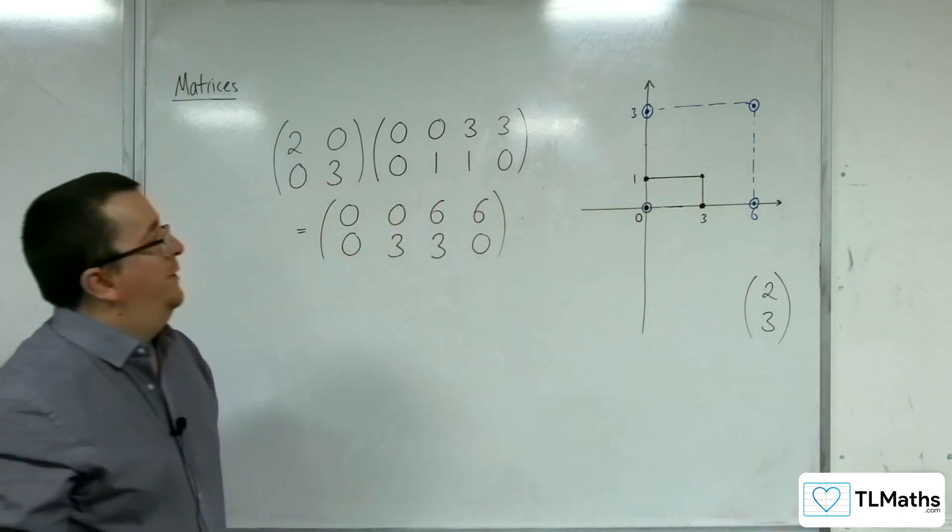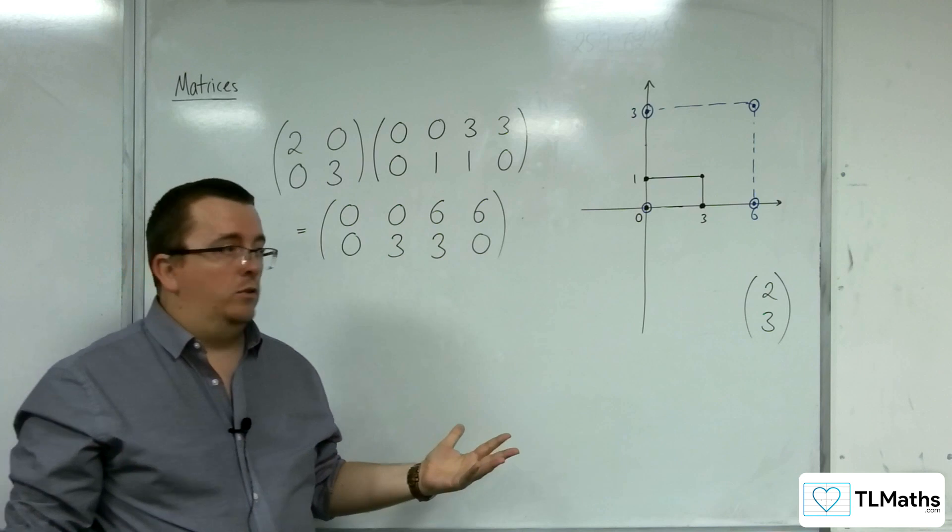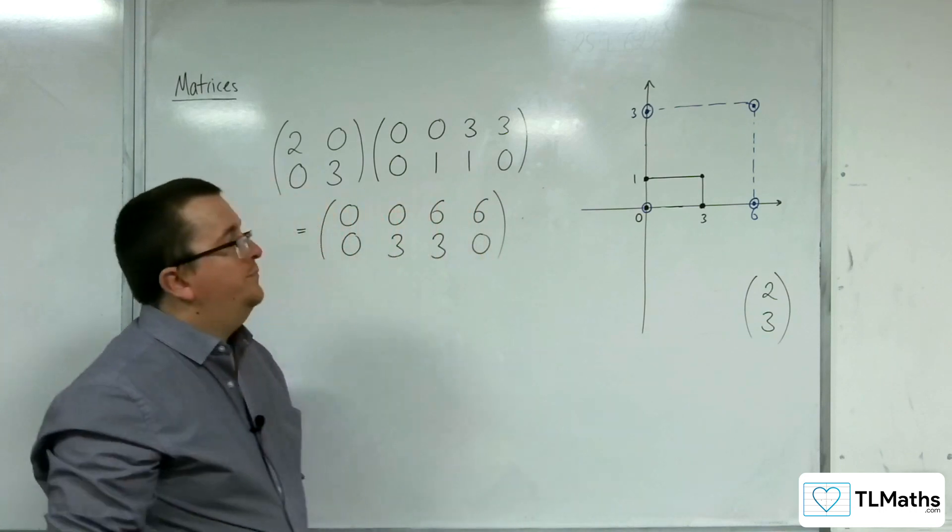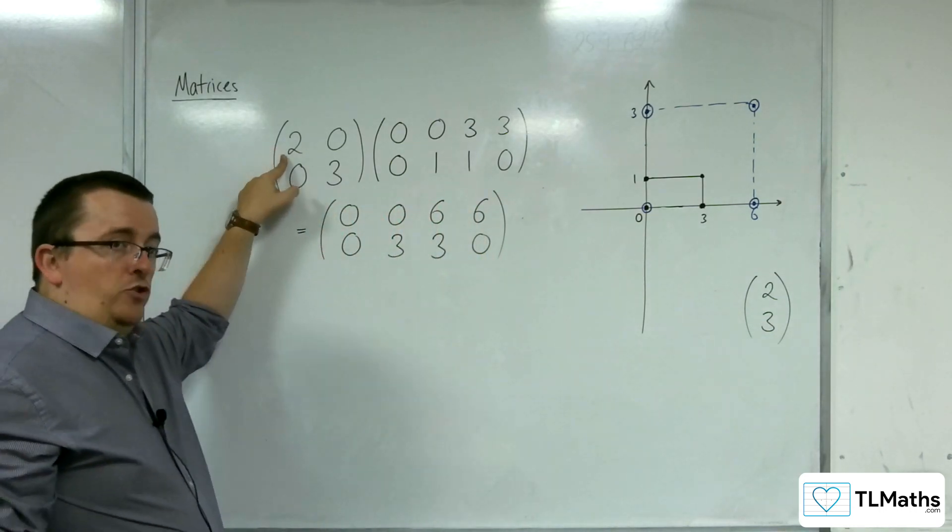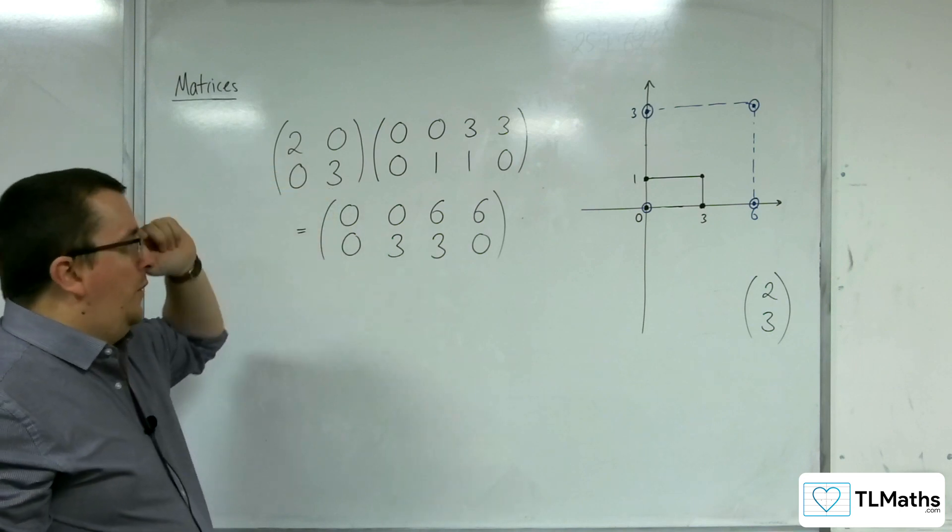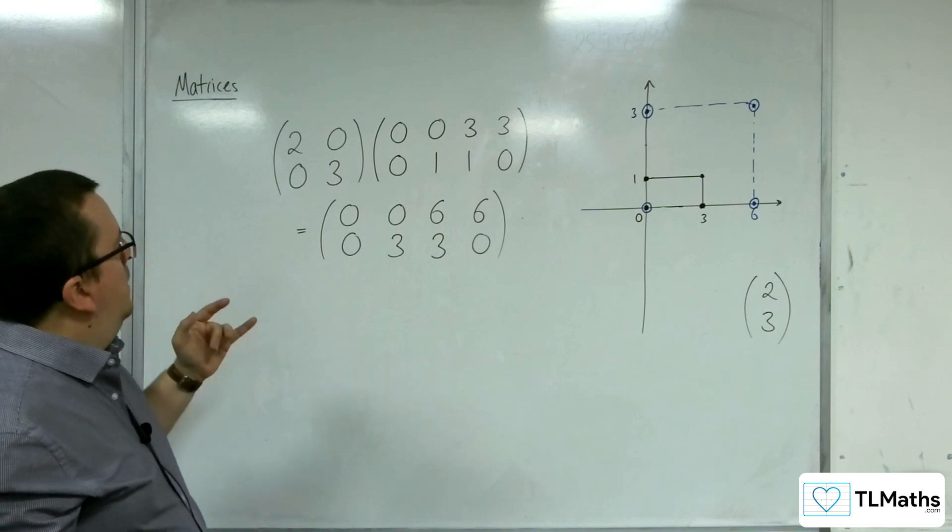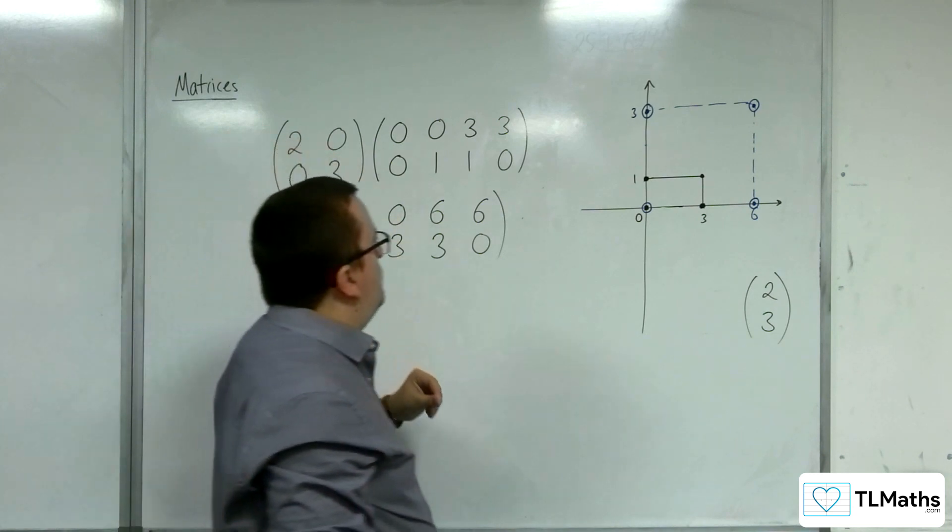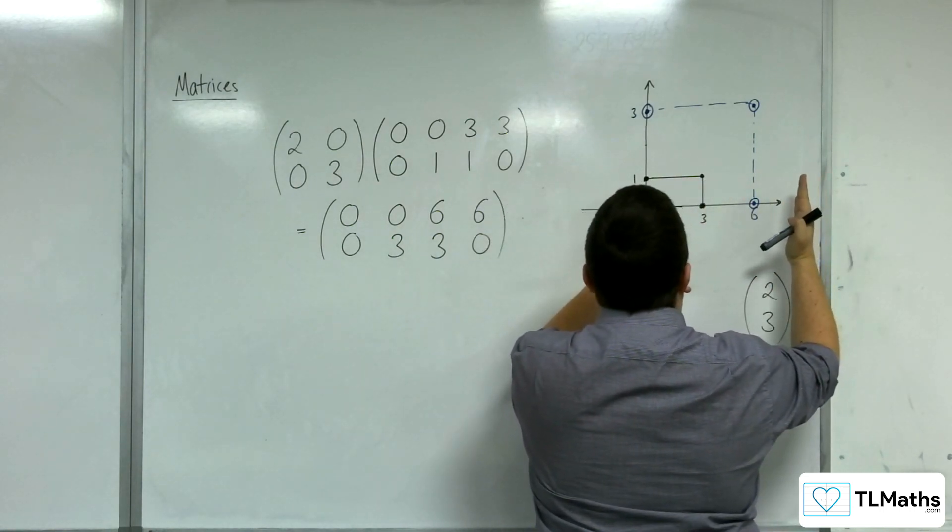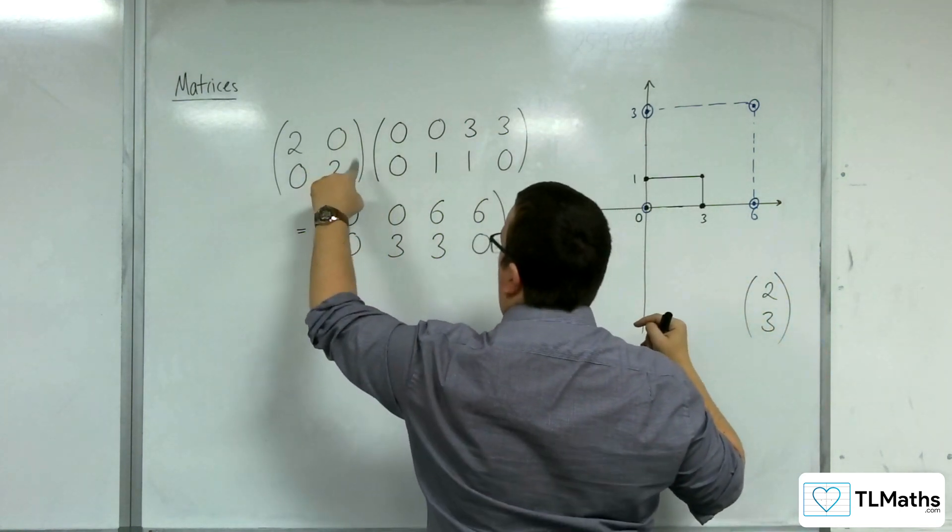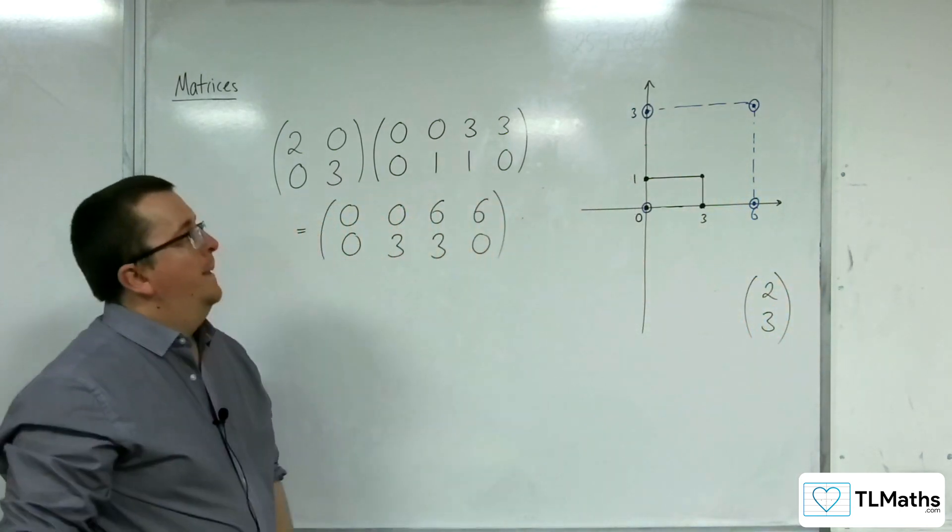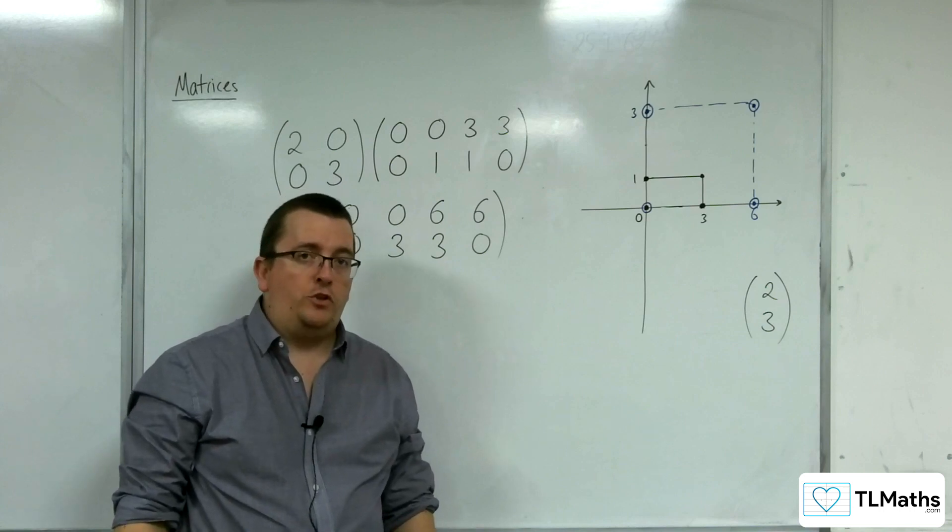So what's happened? Well, my original rectangle has doubled in width and tripled in height. Doubled in the x direction. So what we are appearing to see is that this matrix is representing a stretch parallel to the x-axis by factor 2. And this part here is a stretch parallel to the y-axis factor 3, stretching my rectangle in two different directions at the same time.